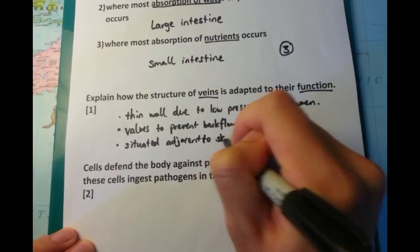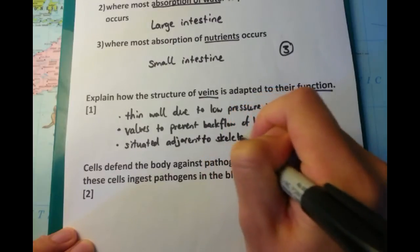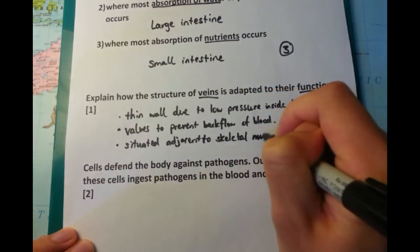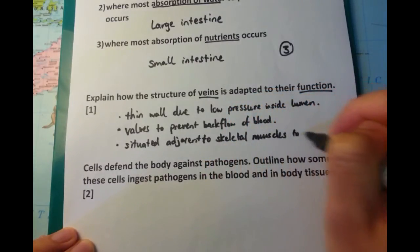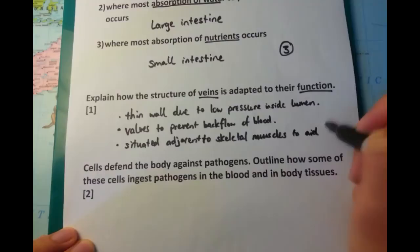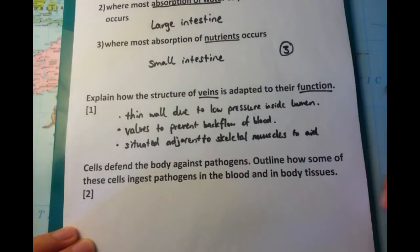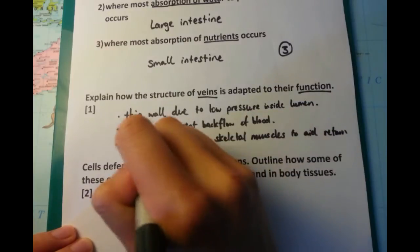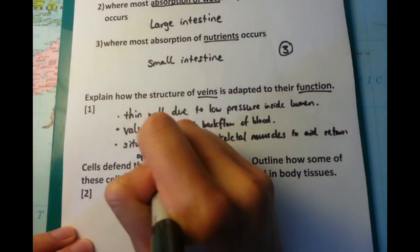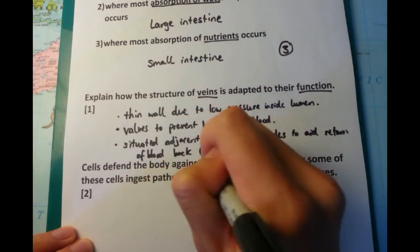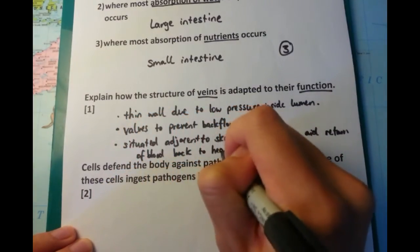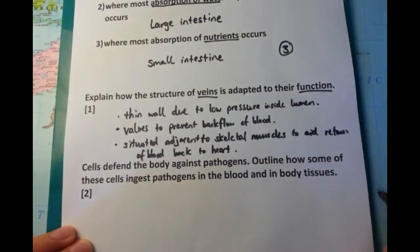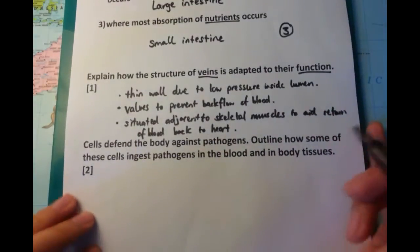The final point is that veins are situated right next to skeletal muscles. So as you walk, for example, the contraction of the muscles actually helps the blood within the vein be pumped back to the heart. This is once again due to the low pressure inside the vein itself.